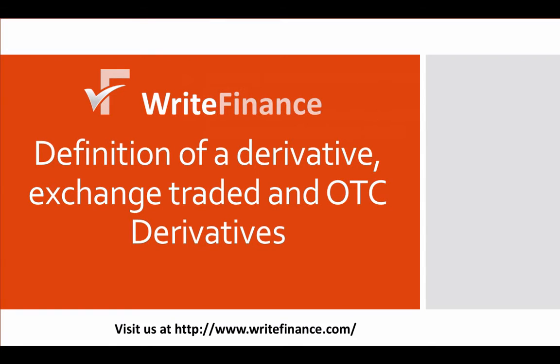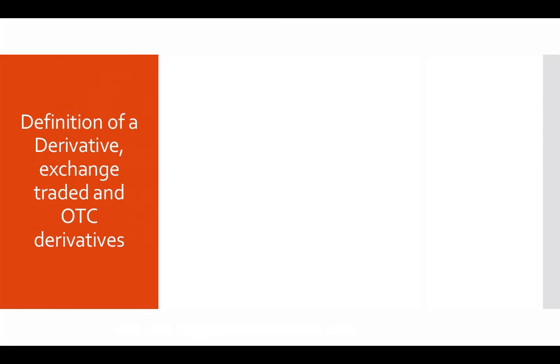Hi and welcome to this lecture where I talk to you about the definition of a derivative and the different kinds of derivatives: exchange-traded and OTC derivatives. First, the definition: a derivative is a security that derives its value from another security or asset. Such an asset or security is also known as an underlying.